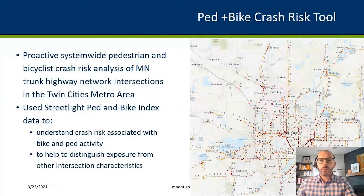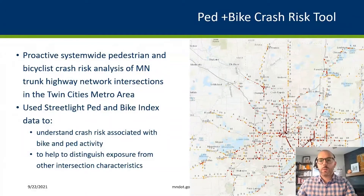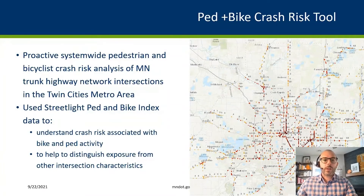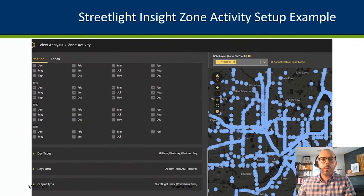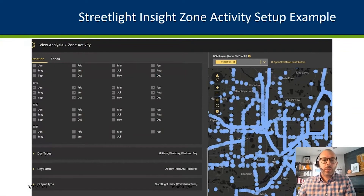The next use case is where we used the Streetlight bike and ped index data in the development of our ped and bike crash risk tool. This tool is a proactive system-wide pedestrian and bicyclist crash risk analysis of Minnesota trunk highway network intersections within the Twin Cities metro area. We used the Streetlight ped and bike index data to understand crash risk associated with ped and bike activity and to help distinguish exposure to ped and bike crashes from other intersection characteristics. To get that index data, we set up a simple zone activity analysis within the Streetlight Insight platform. We analyzed 2019 data to get pre-COVID data, since COVID transformed a lot of travel patterns. For day types, we selected all days, weekends, and weekdays, and all parts of the day. The output was the pedestrian index and then we also ran the same thing for the bike index.